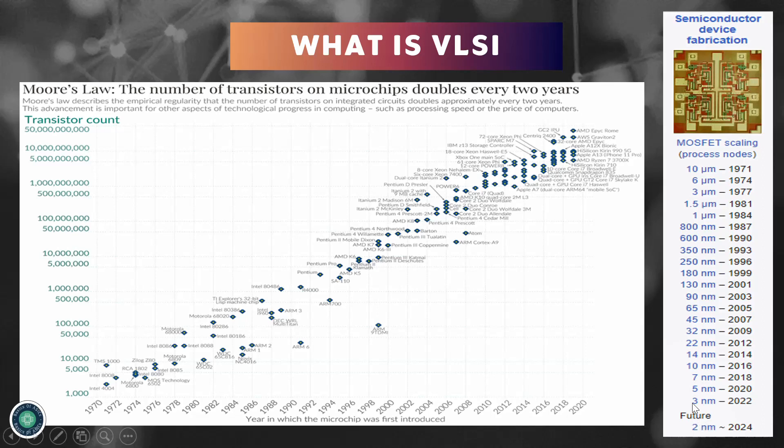Process technology nodes have scaled down with time — from 10 micrometers in 1971, down to 3 nanometers in 2022, and moving toward 2 nanometer and 1 nanometer in the future. But with this increasing number of transistors and reduction in area, complexities have also increased, causing ever-growing challenges for design engineers in achieving goals like performance, area, and power.